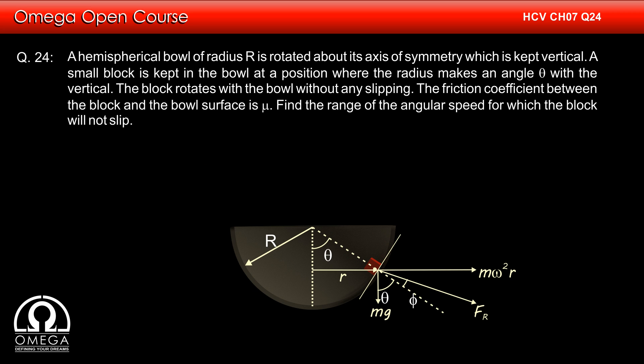If we keep on increasing omega, the centrifugal force increases and so does the angle between fr and mg. When fr reaches the angle phi, that is tan inverse mu, to the other side of the normal, the block will now start sliding upwards.